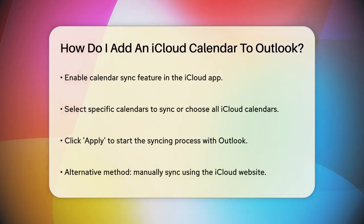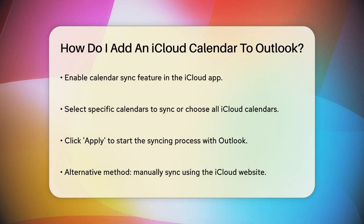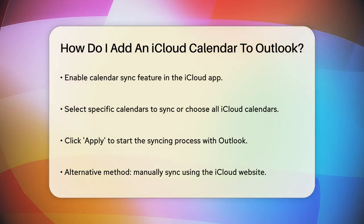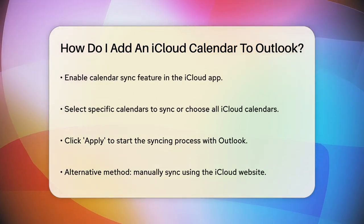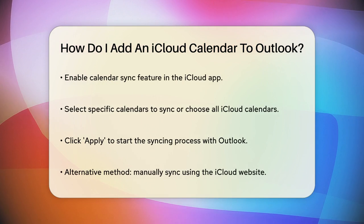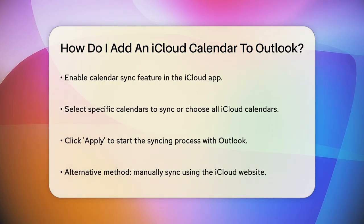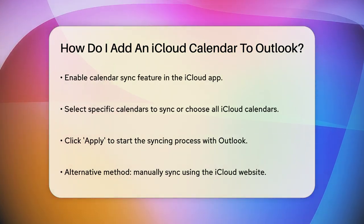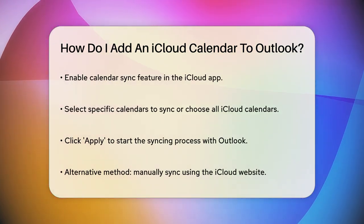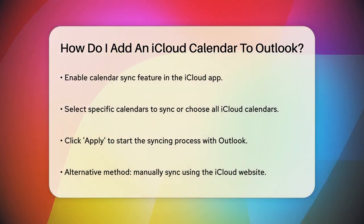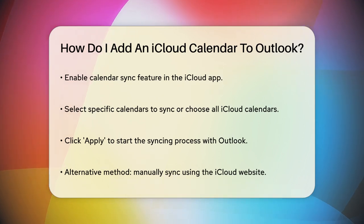Next, select the specific calendars you want to sync with Outlook. This way, you can choose to sync all your iCloud calendars or just the ones you need. After you've made your selections, click Apply, and the iCloud app will start syncing your calendars with Outlook.